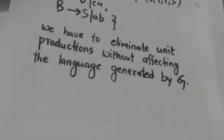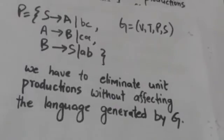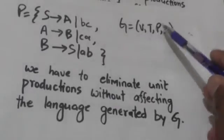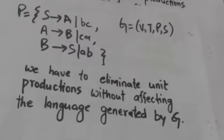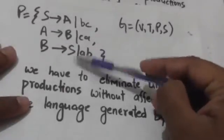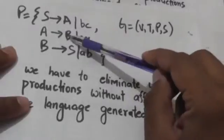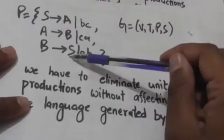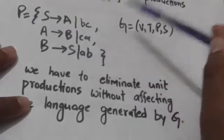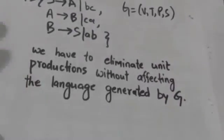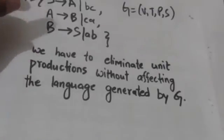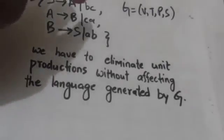Consider a grammar G defined by the quadruple (V, T, P, S), where V is the set of variables, T is the set of terminals, P is the set of productions, and S is the start symbol. The productions in set P are: S derives A, S derives BC, A derives B, A derives CA, B derives S, and B derives AB. We have to eliminate unit productions from this grammar G without affecting its language.